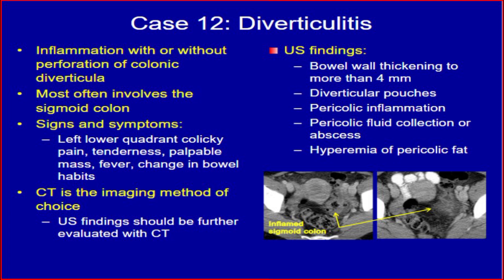CT is the imaging method of choice. Ultrasound findings should be further evaluated with CT. Ultrasound findings include: bowel wall thickening to more than 4 mm, diverticular pouches, pericolic inflammation, pericolic fluid collection or abscess, and hyperemia of pericolic fat.